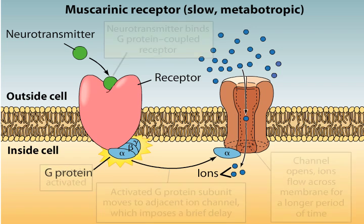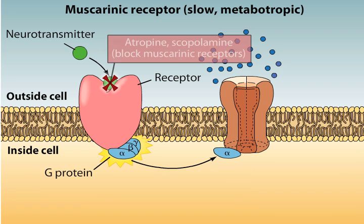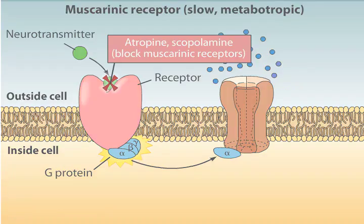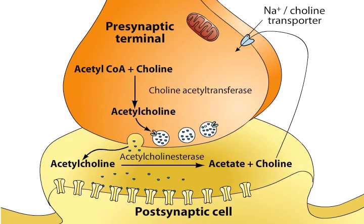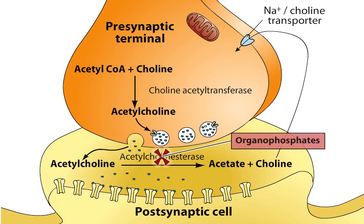Muscarinic receptors can be blocked by the drugs atropine or scopolamine. Certain organophosphate insecticides, such as diphenyl trichloroethane, DDT, and the nerve gas sarin, inhibit the enzyme acetylcholinesterase, causing ACH to accumulate at the synapse. This buildup of acetylcholine depolarizes the postsynaptic cell and renders it refractory to subsequent acetylcholine release, causing, among other effects, neuromuscular paralysis.